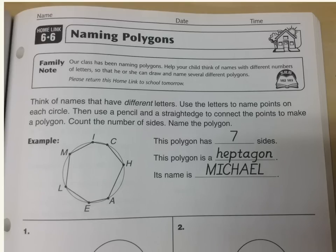By request, this is Everyday Math 3rd Grade Homelink 6.6 Naming Polygons. We are going to take a quick look at this — let's look at the directions first. You're going to think of names that have different letters, so you can choose any name you want as long as the letter is not repeated twice. For example,